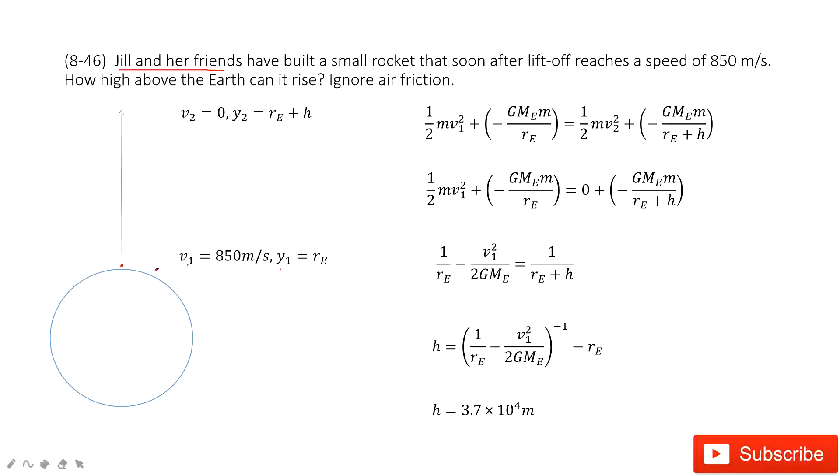Finally this rocket will reach the peak point. We call it position 2. The velocity at the peak must be zero and the position is the Earth's radius plus how much the rocket traveled, h.